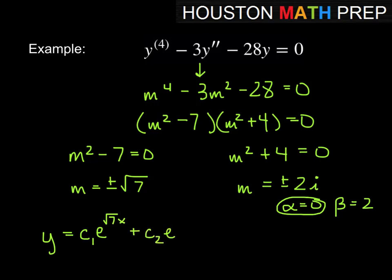So first the real values. We have c1 e to the root 7 times x plus c2 e to the negative root 7 times x plus c3 cosine of 2x plus c4 sine of 2x. So remember the cosine and the sine terms we're getting from the complex values for m. The root 7s we're getting from the real values for m.